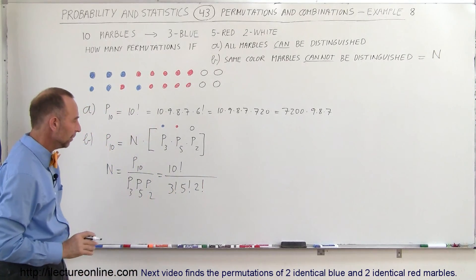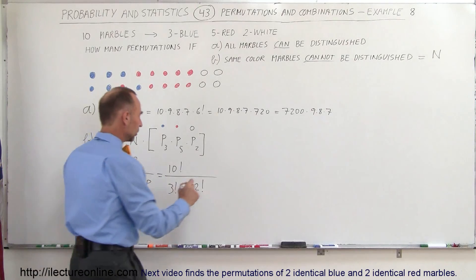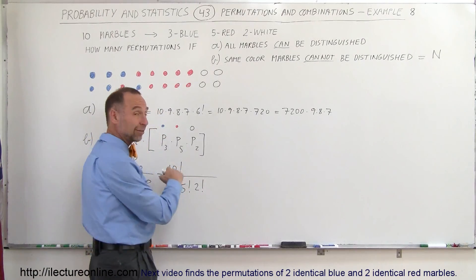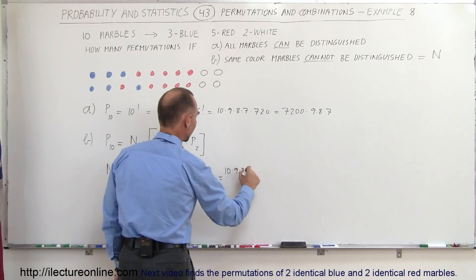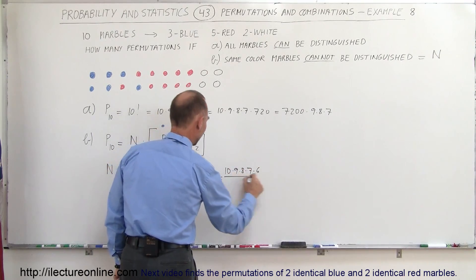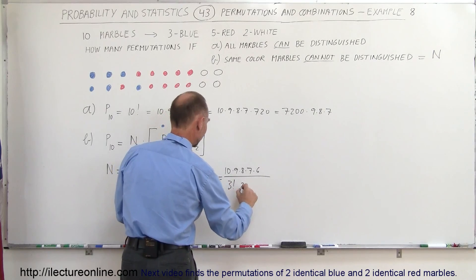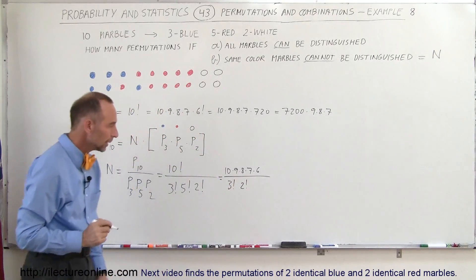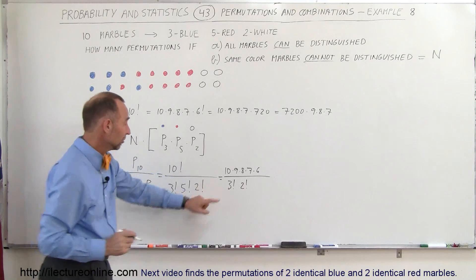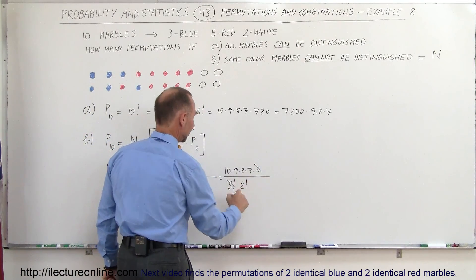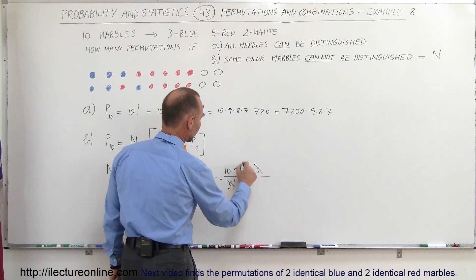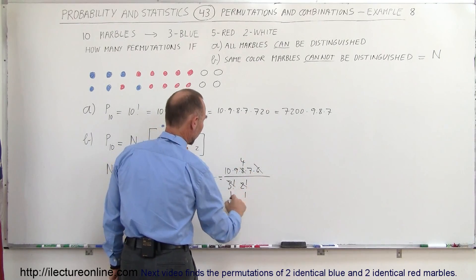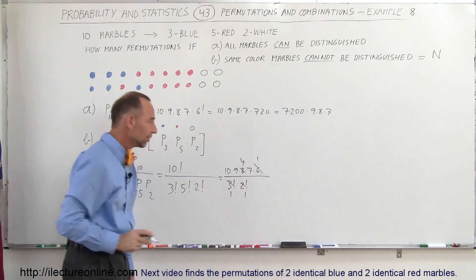And that we can simplify somewhat, because ten factorial divided by five factorial, you get rid of the first five numbers, so this is equal to ten times nine times eight times seven times six, divided by three factorial and two factorial. Now three factorial is six, so the six cancels out with this, and two factorial is two—we can divide it into eight and we get four. So this becomes four, this becomes one, and one, and one, like that.